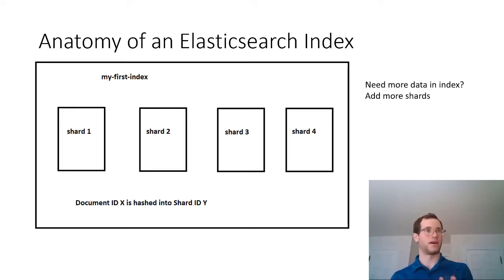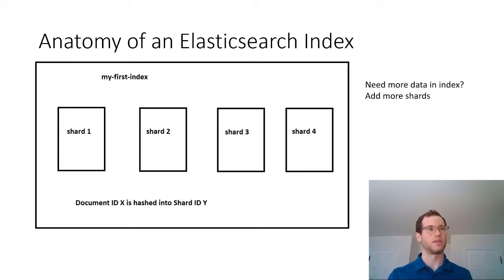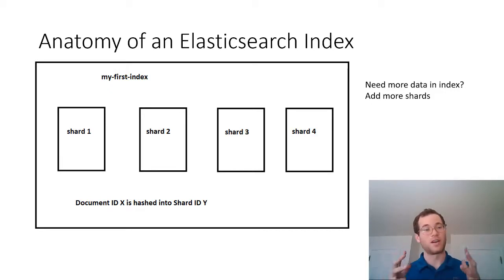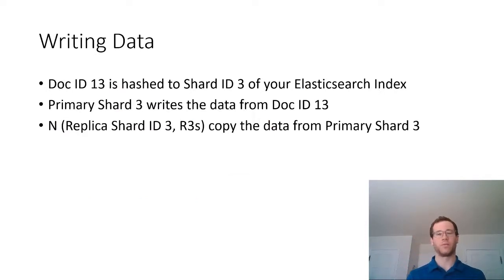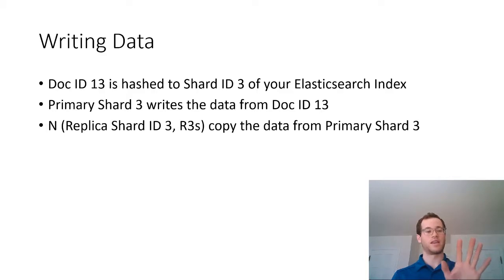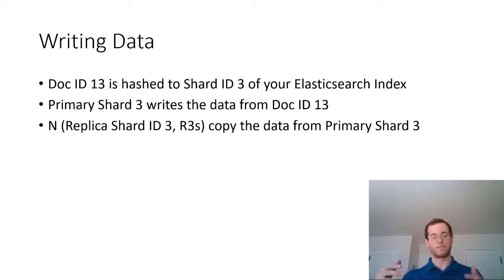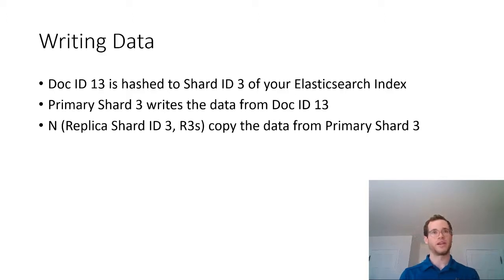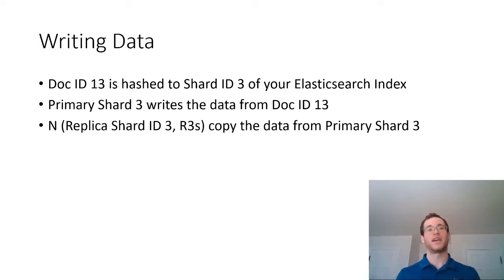For example, if I had document ID 5, the Elasticsearch hashing function would say document 5 should go into shard 2 — that's where document 5 will live. To save more data into an Elasticsearch index, you add more shards, but it's important to note that the shard count is defined at index creation time. So when writing document ID 13, the hashing function says it goes into shard ID 3. Primary shard 3 stores that data, and then all replica shards with shard ID 3 detect the new data and persist it as well, increasing availability.